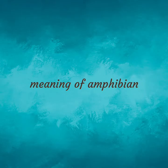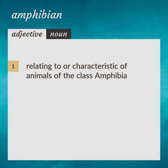Meaning of amphibian: relating to or characteristic of animals of the class Amphibia. Amphibious.